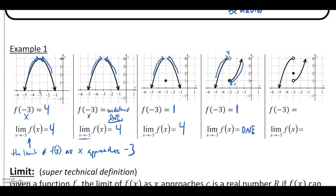Let's look at the last example. f of negative three — I go to negative three and find a defined point with a y value of two. But I still have the same problem as the previous example. Looking at the limit as x approaches negative three for this function: coming in from the left, it sure looks like I'd get to a y value of four. Coming in from the right, it looks like the graph would be getting to a y value of one. Since it's different depending on which side I come in from, those two sides do not match up, so that limit does not exist.